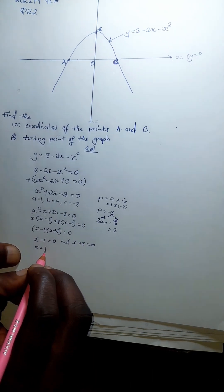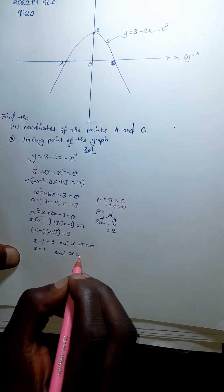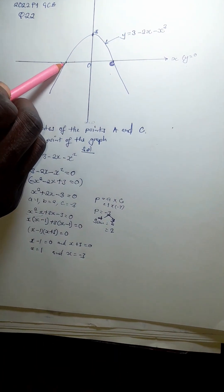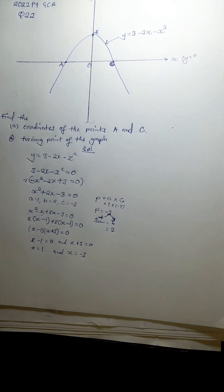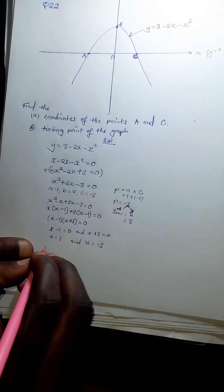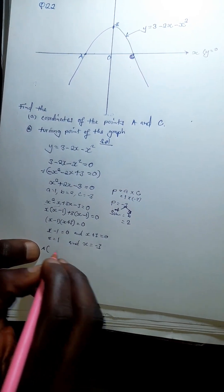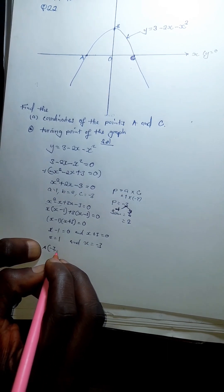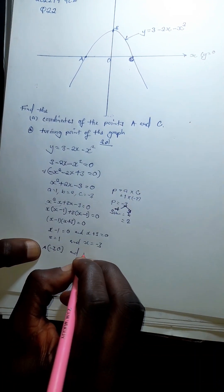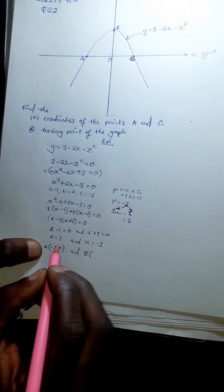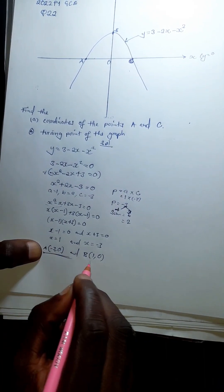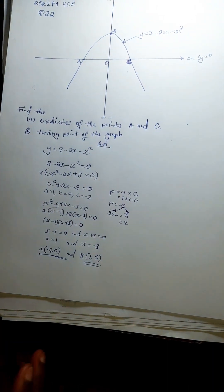Solving: x = 1 and x = −3. Looking at the graph, A is on the negative side and C is on the positive side. Therefore, the coordinates of A are (−3, 0) and the coordinates of C are (1, 0). This is the answer to the first question.